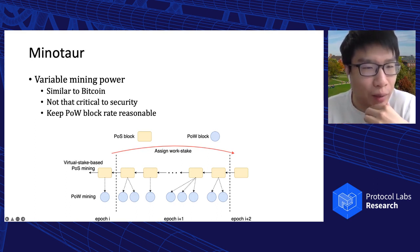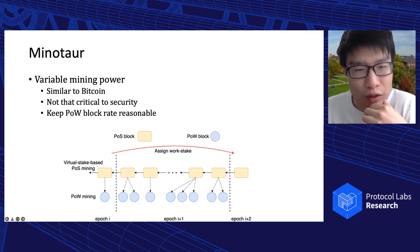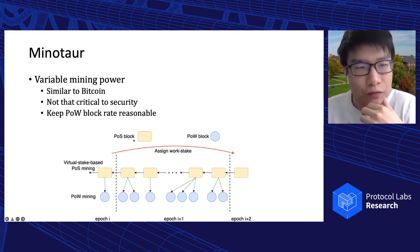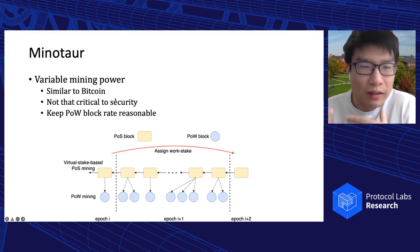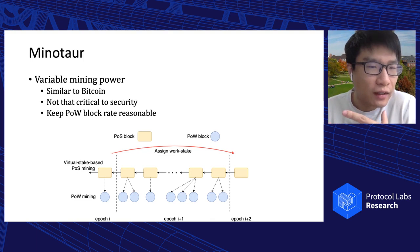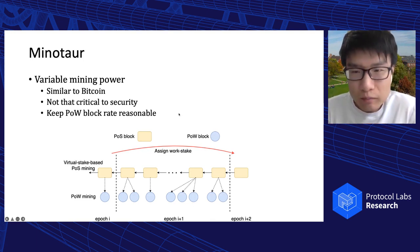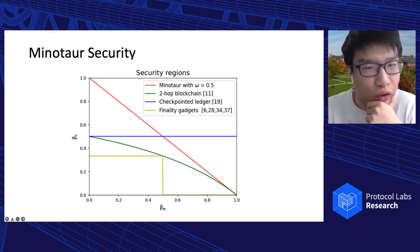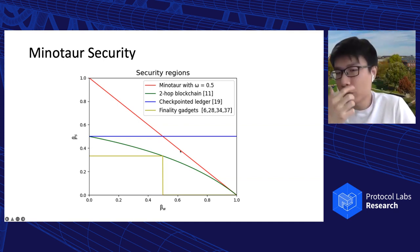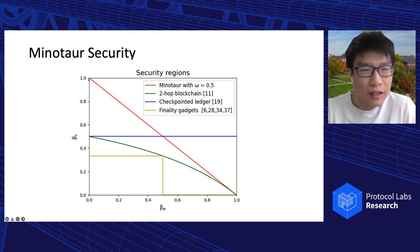It is not critical to security to keep the PoW block rate exactly right, but we still want to keep it reasonable — if the rate is too large it may exceed network capacity, and if too small there will be high variance in work stake assignment, making it unfair. This figure shows the security region of Minotaur together with other hybrid PoW/PoS protocols. Minotaur with ω = 1/2 is represented as a line, and in the paper we prove that Minotaur achieves optimal security — the region bounded by that curve cannot be enlarged further.